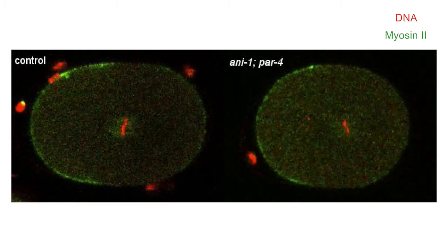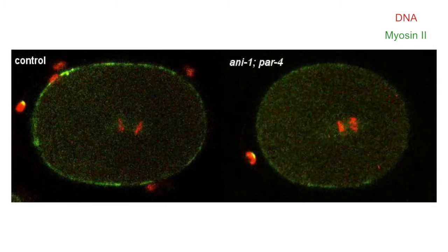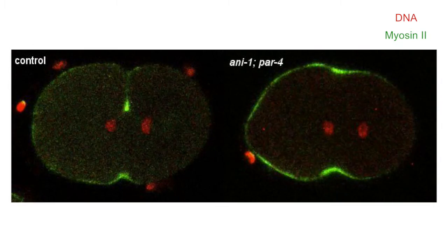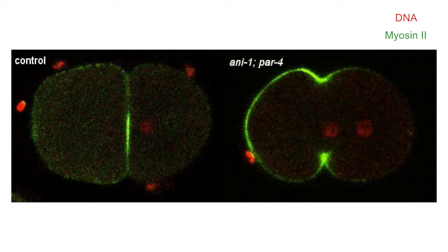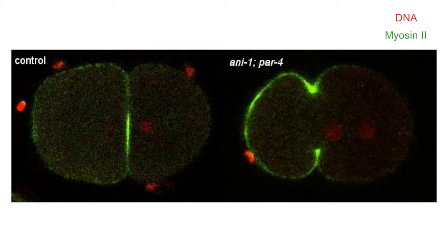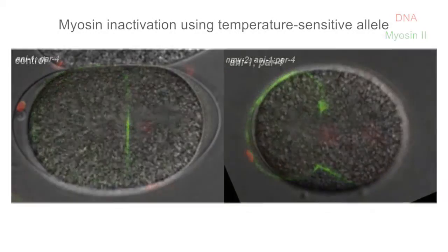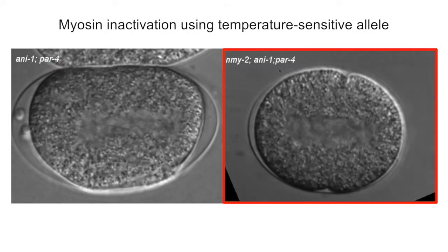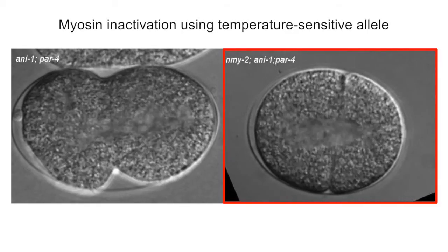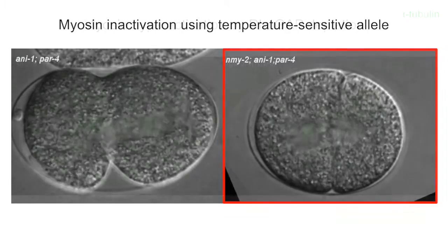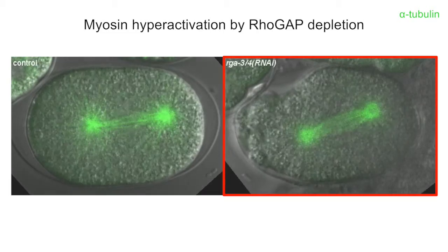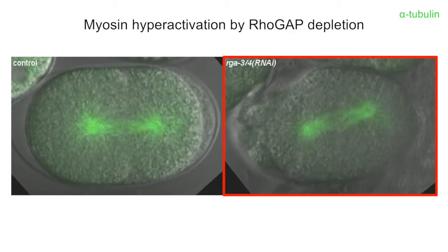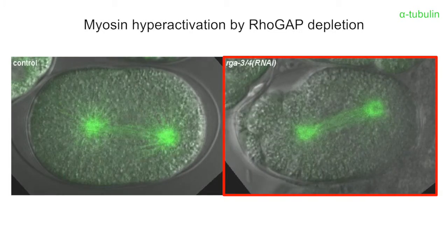Since myosin is known to induce furrow ingression in asymmetrically dividing neuroblasts the researchers suspected that the abnormal accumulation of myosin in mutant embryos might be responsible for the shift in cleavage furrow position. Indeed if we inactivate myosin at the onset of cytokinesis then we do not see the shift of the furrow towards the anterior anymore. And if we get over-activation of myosin by completely independent means then we also see the furrow forming towards the anterior of the embryo.